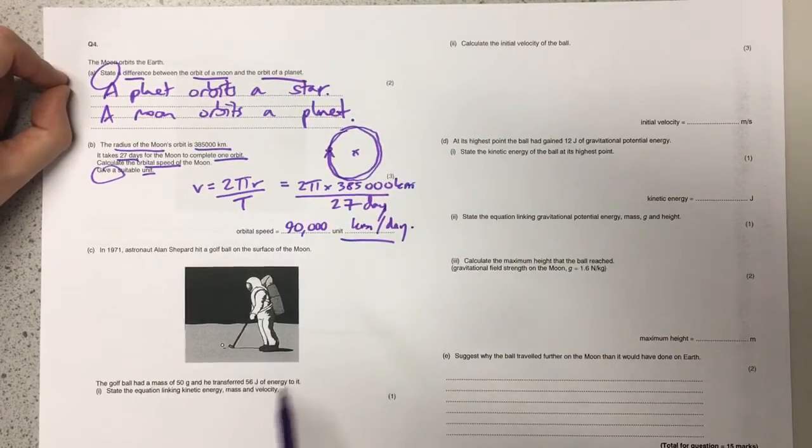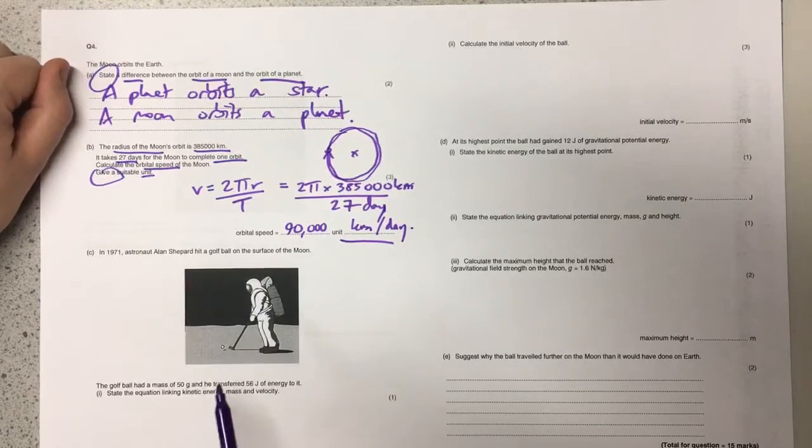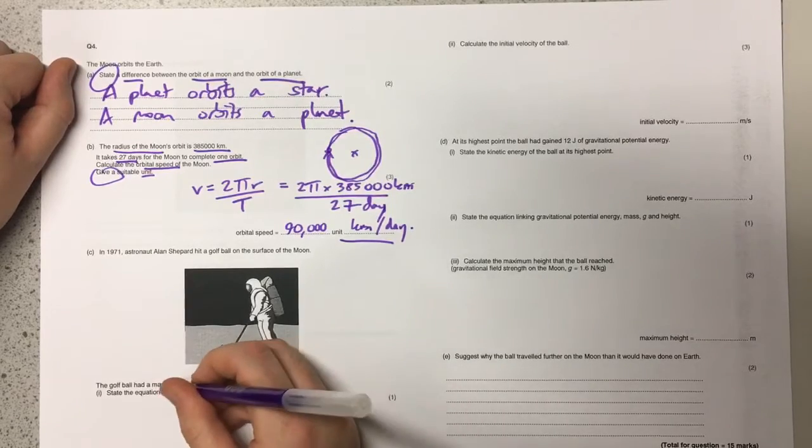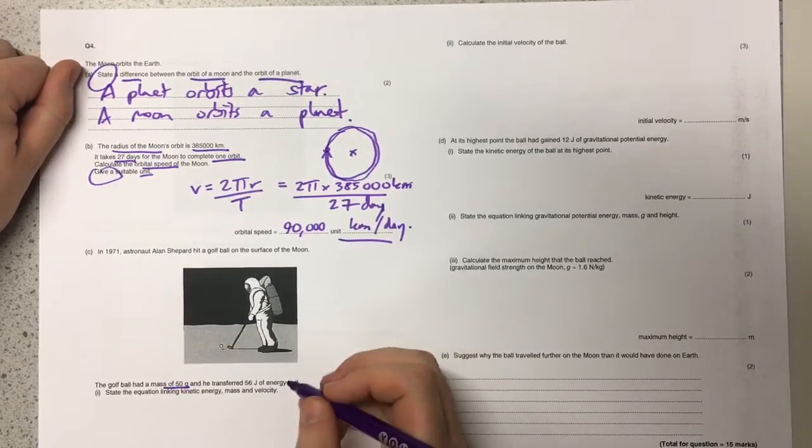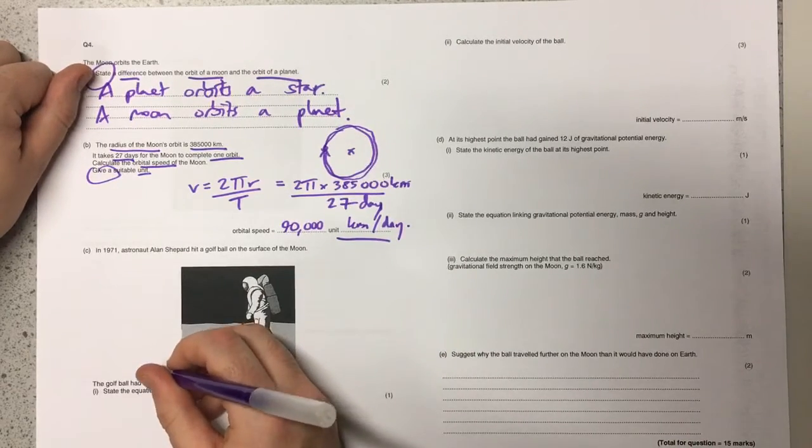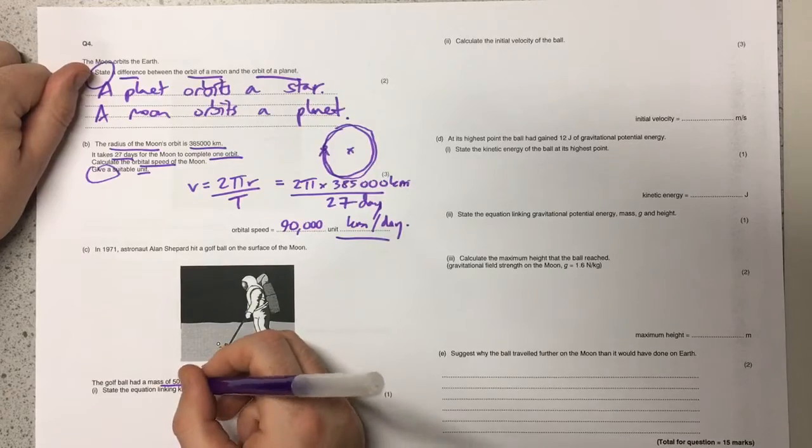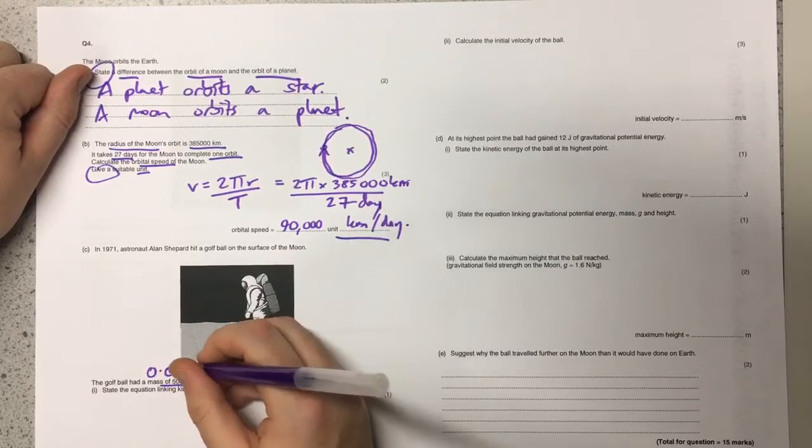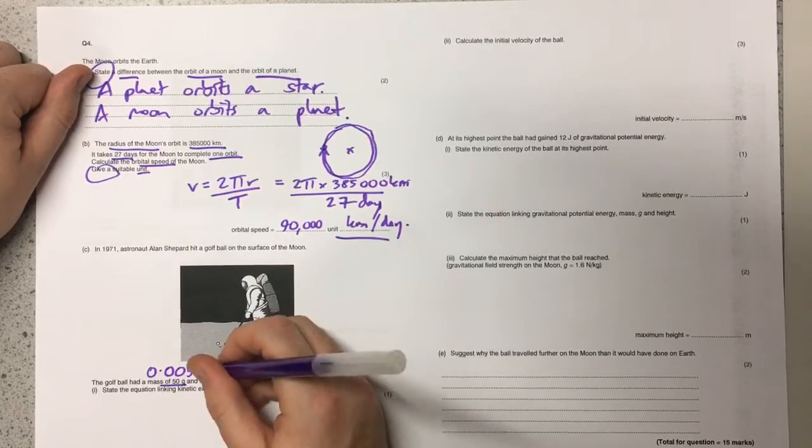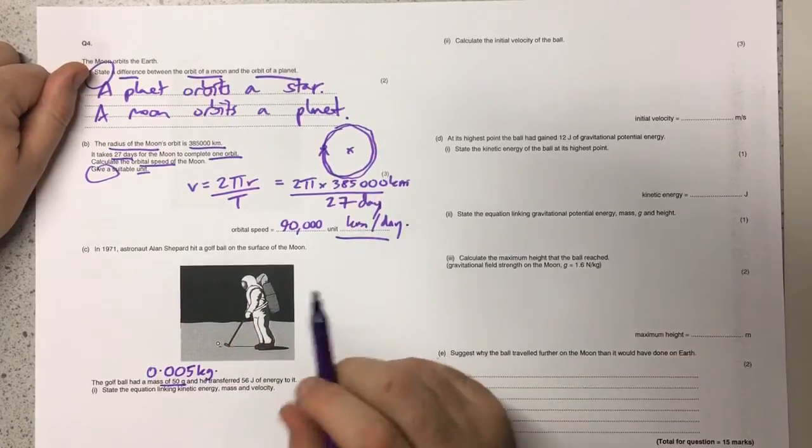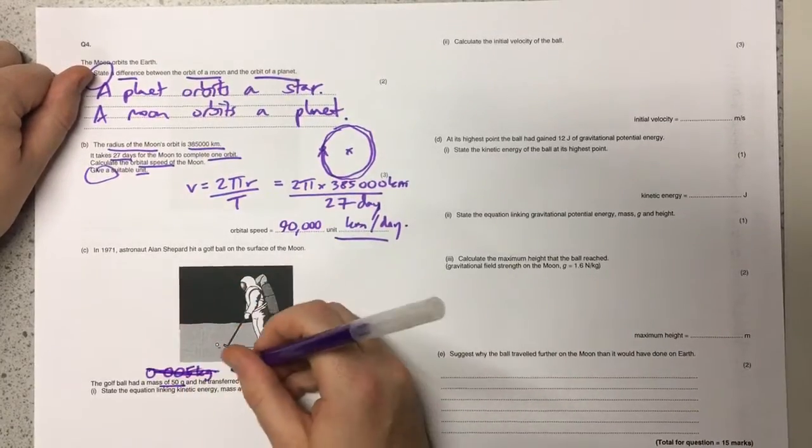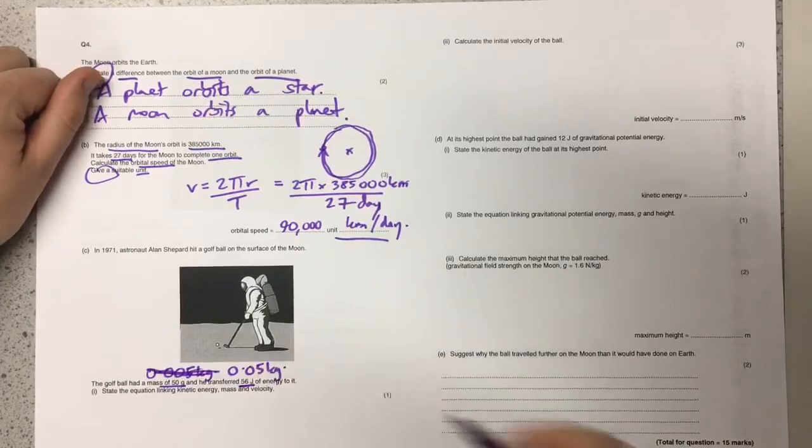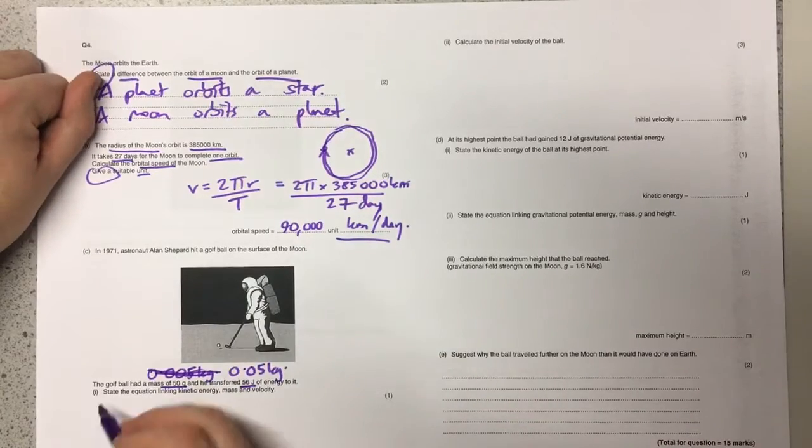The next part of the question shows a picture of an experiment that Alan Shepard did while he was on the moon in 1971 when he hits a golf ball with a golf club. This says that the mass of the golf ball was 50 grams. I'm already going to think mass should really be in kilograms, so I'm going to divide that by a thousand to convert it into kilograms. If I divide 50 by a thousand, I would get 0.05 kilograms. Then it says that he transferred 56 joules of energy to it and asks us to state the equation linking kinetic energy, mass, and velocity.